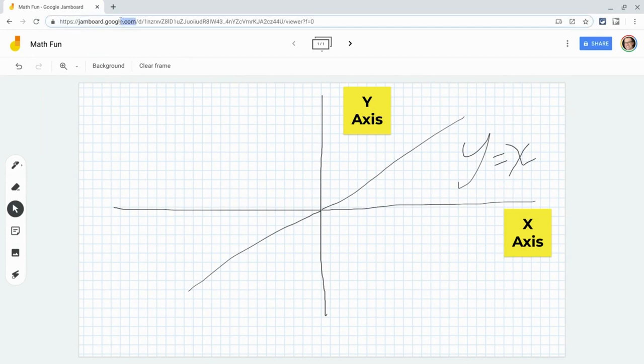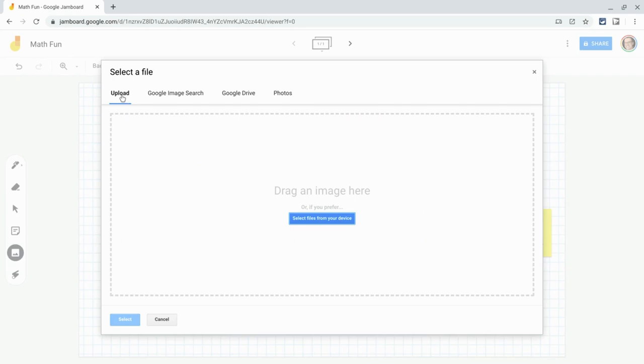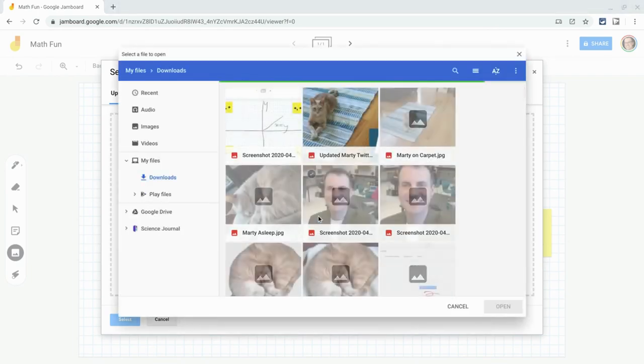So I'm in jamboard.google.com. There's the add image icon, but it's been updated, and so now you can upload off your device. It used to be when they dropped this in February 2019, it was just Google image search, Google Drive and Google photos. But now you can upload right from your device.